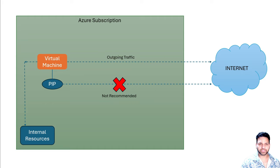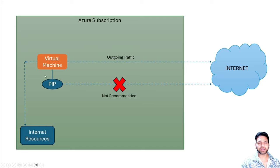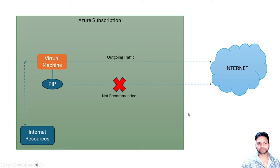In real-time scenarios it's not recommended to assign a public IP address to the virtual machine. So let's rule out this option. The default option is direct connectivity to the internet, and internal resource connectivity will work as it is.